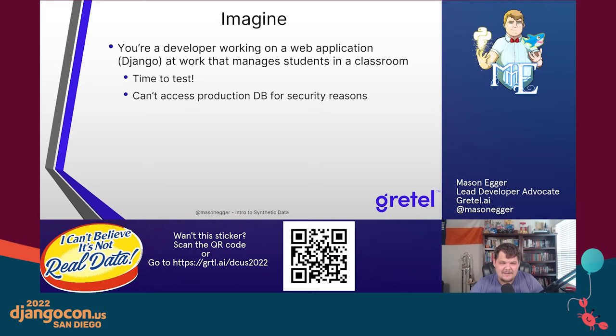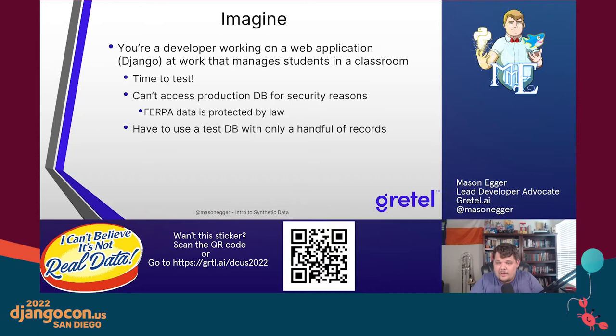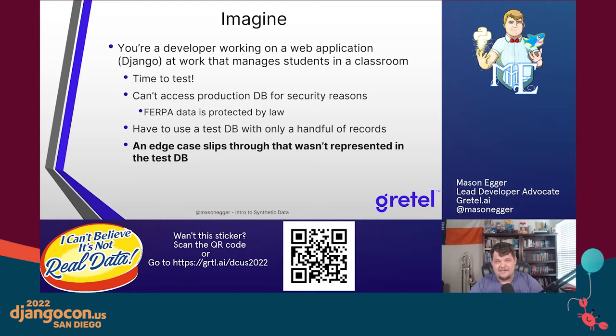But then you realize you can't. For security reasons you're not allowed to have access to the production database. There are also things like FERPA, which is a law that protects student information. So not only can your boss not give you access, it may actually be illegal for you to have any of this data. You end up having to test with a database that maybe only has a handful of records — some fixtures, some sample data — but it doesn't really represent the population you're working with. An edge case slips through that might have been caught with real data.